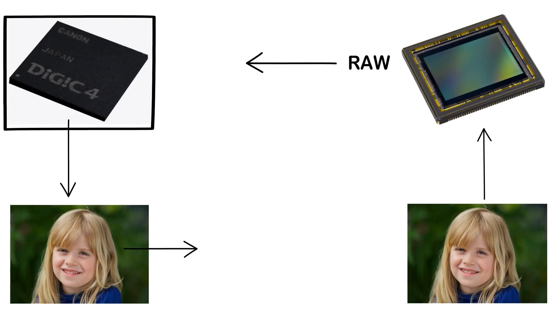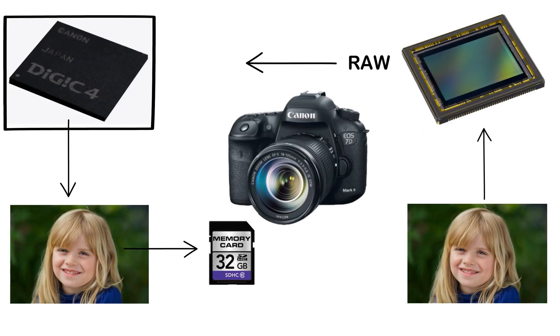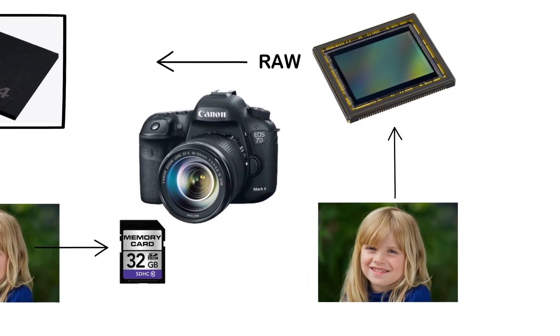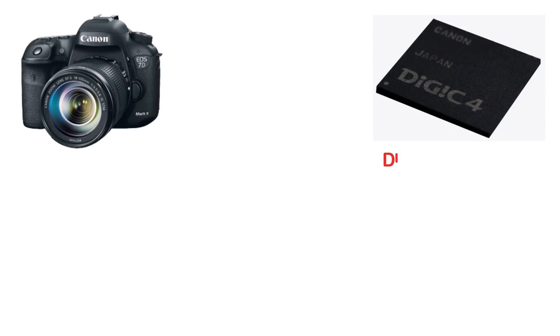The processor will transfer the memory. They will see the memory and process or delete them. The processing of the processor will be completed in milliseconds. The DSLR camera will work the same way. This is the Canon camera color system and the same camera company approach.